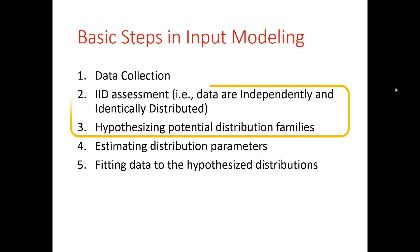In this video we mainly cover the second and third steps in input analysis: IID assessment and hypothesizing potential distribution families. The main reason for assessing whether data is IID is that all of the proceeding steps — steps three through five — are based on the assumption that data is independently and identically distributed. For example, if you use a statistical software package to perform a goodness of fit test, the main assumption of that test is that the data is IID. So if you skip step two or fail to establish the IID assumption, basically the rest of your analysis will be incorrect.